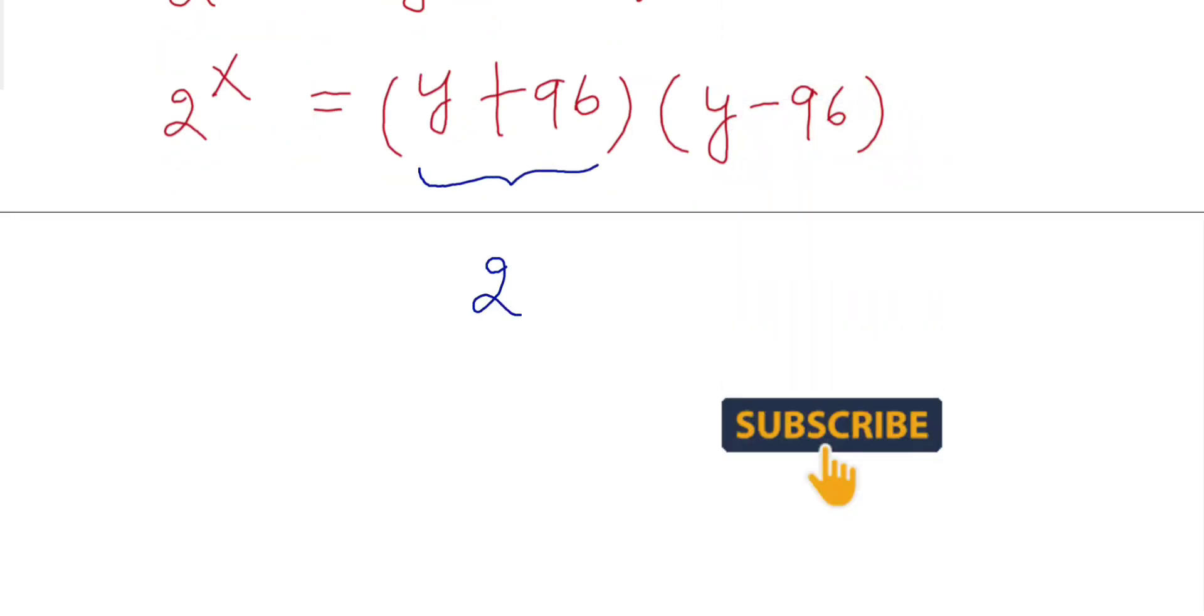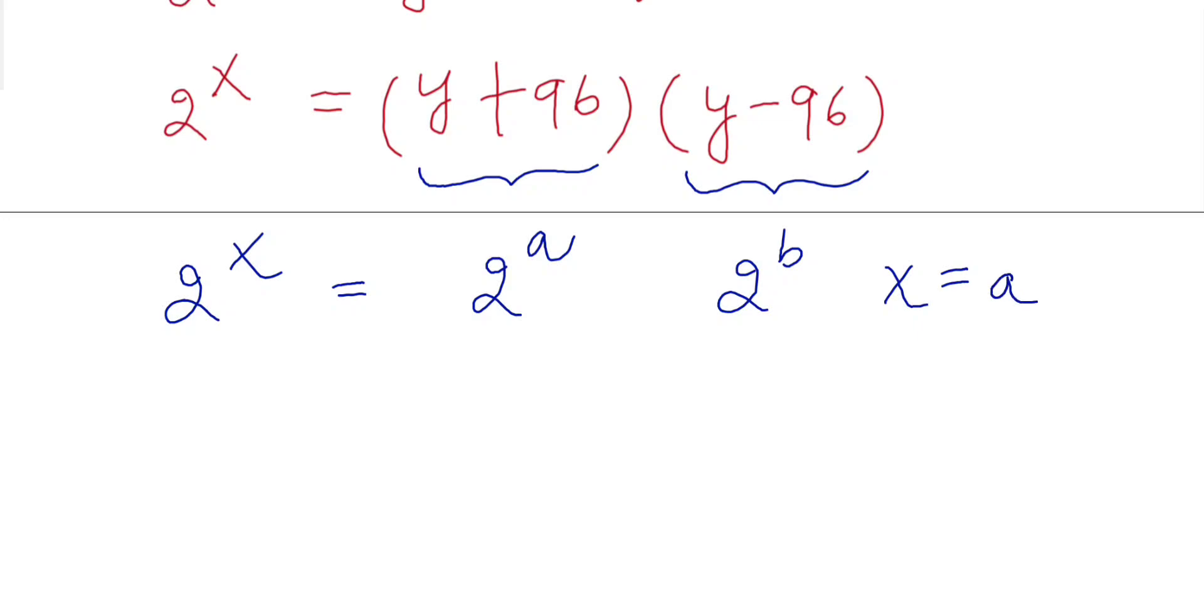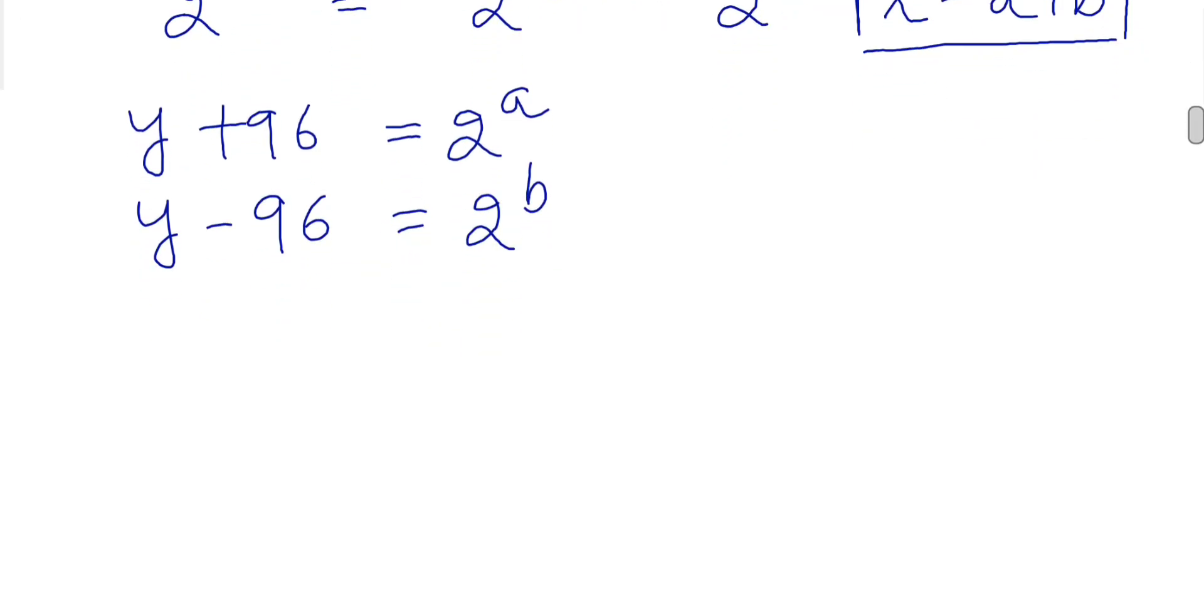This must be some power of 2 and this must be some power of 2 in order to be a combination of powers of 2. From here we can see that x equals a plus b. Let's solve: y plus 96 equals 2 to the power a, y minus 96 equals 2 to the power b.